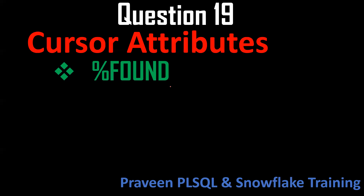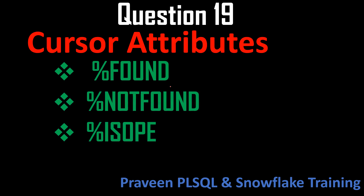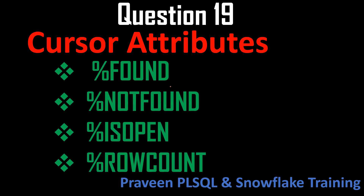Question number nineteen: what are cursor attributes in PL/SQL? They are %FOUND, %NOTFOUND, %ISOPEN, and %ROWCOUNT. For an implicit cursor, the syntax is SQL%FOUND, SQL%NOTFOUND, etc. For an explicit cursor, you use the cursor name followed by the attribute, like cursor_name%FOUND.